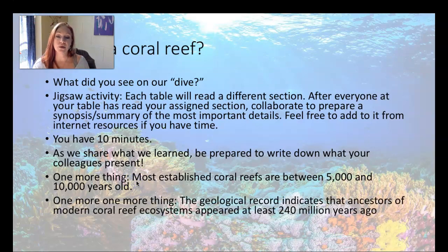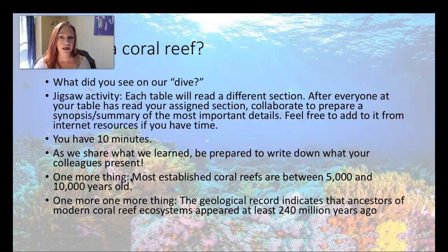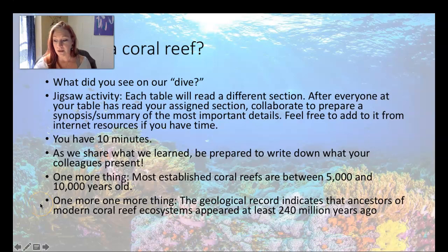The geological record indicates that modern coral reefs' ancestors have been around on the planet for at least 240 million years. In that time, the Earth has been through five to six major extinction events, the continents have moved, the oceans have shifted, and the climate has changed many times. We see coral reefs changing over time, and on land we now see fossil coral reefs — we call them limestone and we use them in a lot of our buildings. In fact, a lot of the buildings in downtown Salt Lake City are made from some limestone.